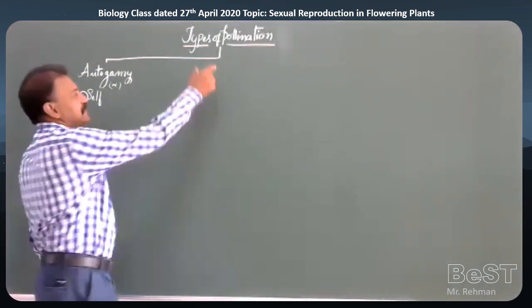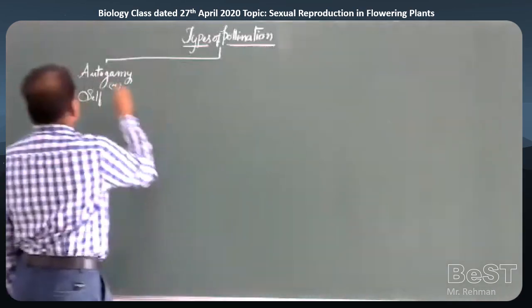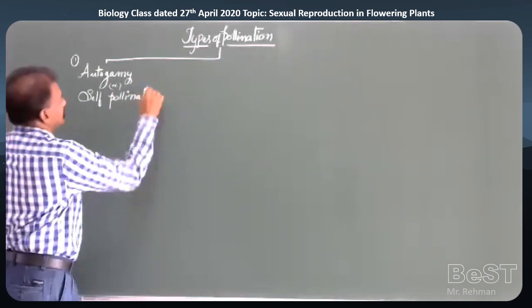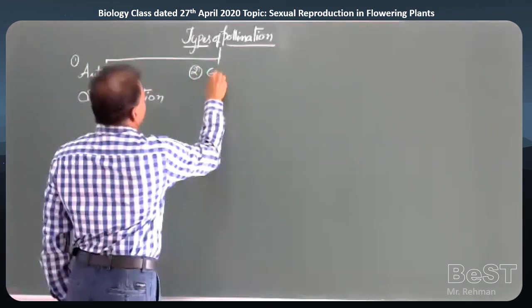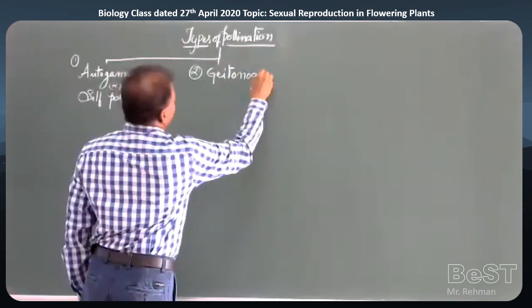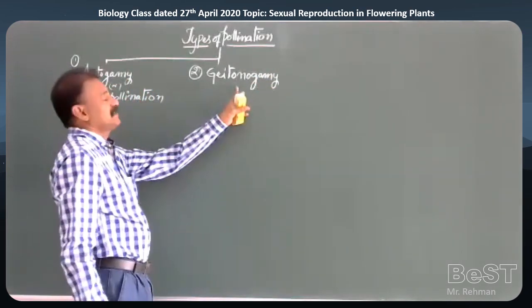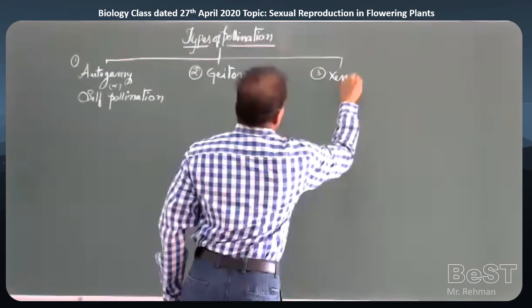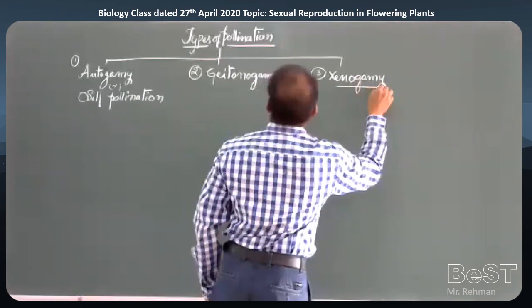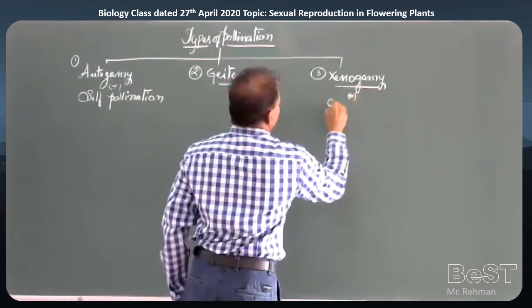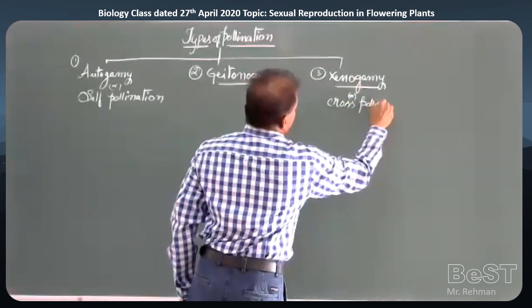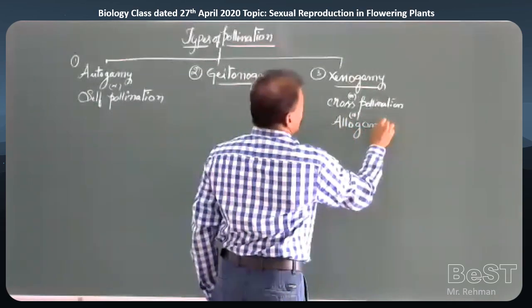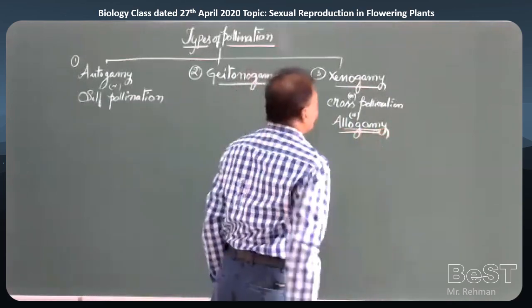In the previous class, we have seen types of pollinations. The first type is autogamy or self-pollination. The second is geitonogamy, which is functionally cross-pollination but genetically self-pollination. The third is xenogamy, which is cross-pollination also called allogamy. 'Xeno' means different, 'gamy' means fusion — different sex organs of different plants are fused.